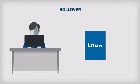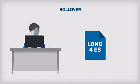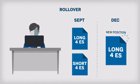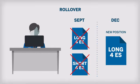For example, a trader who is long four contracts of the E-mini S&P 500 expiring in September will simultaneously sell four September ES contracts and buy four December ES contracts.